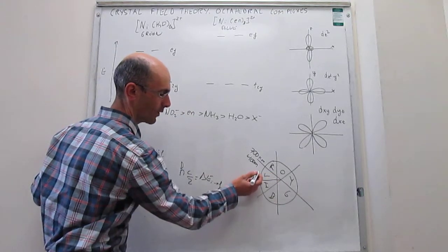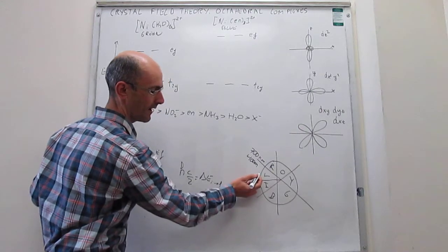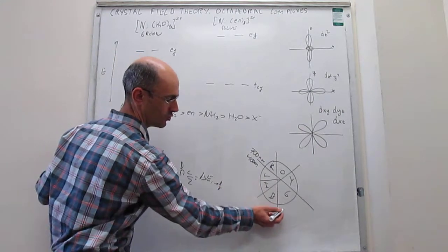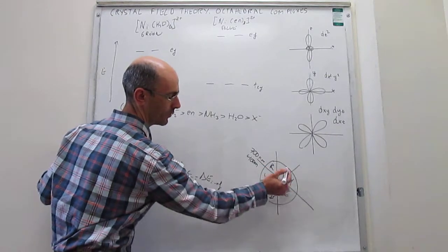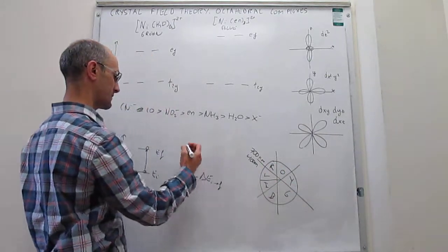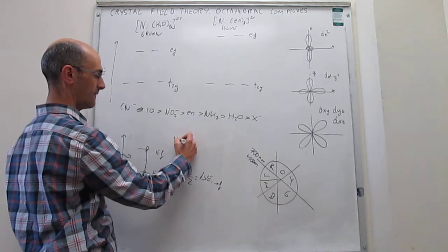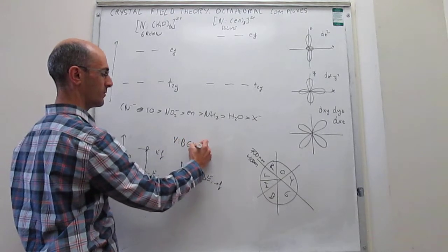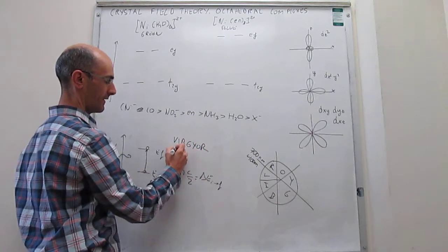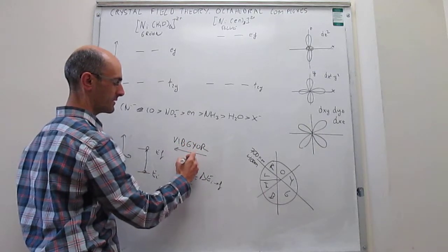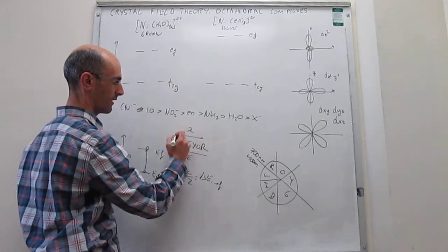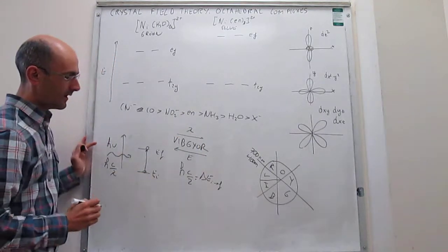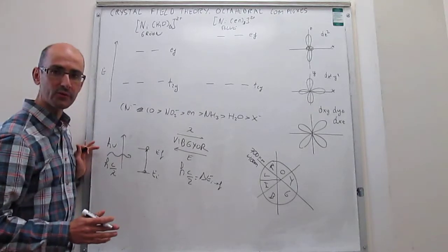That tells you that the order of colors from high energy to low energy, or short wavelength to long wavelength, is along this line. It's going to be VIBGYOR. And again, the energy increases this way, and the wavelength increases that way.